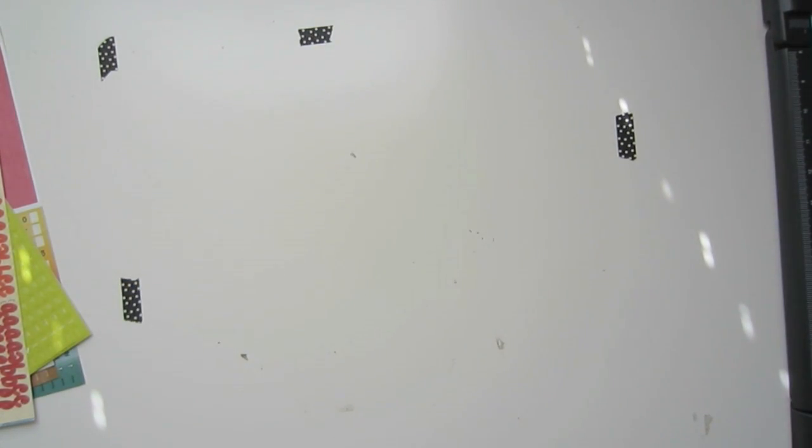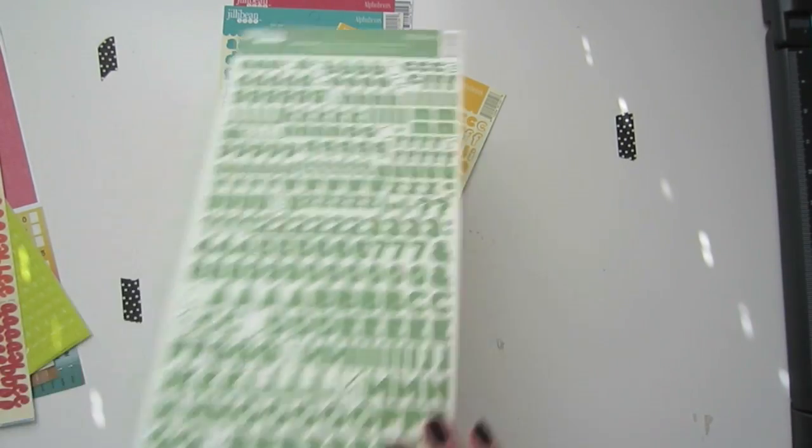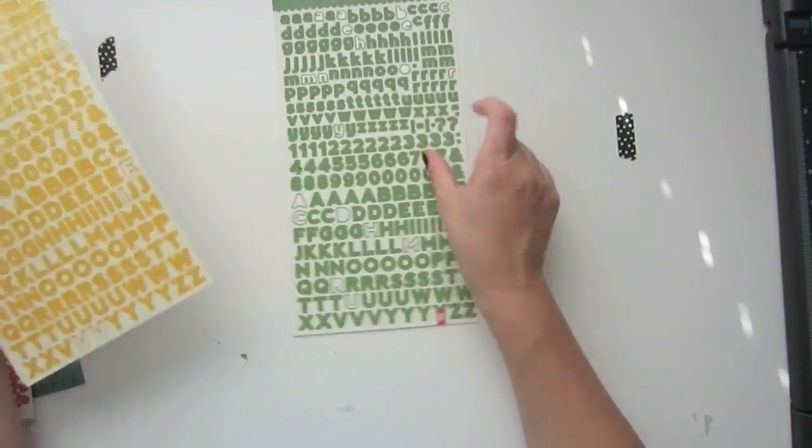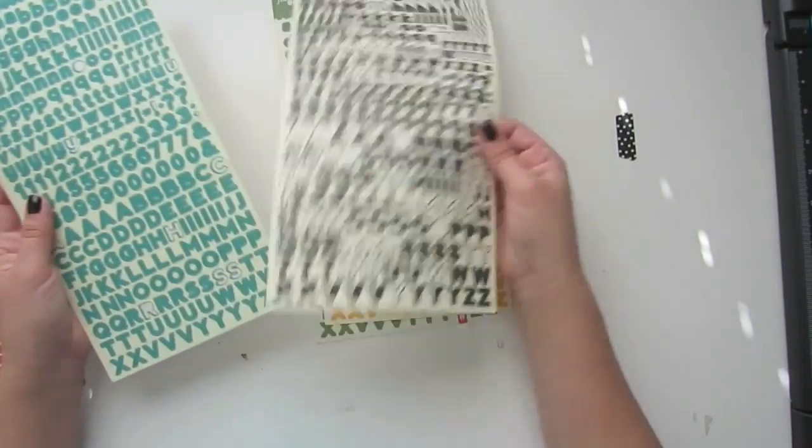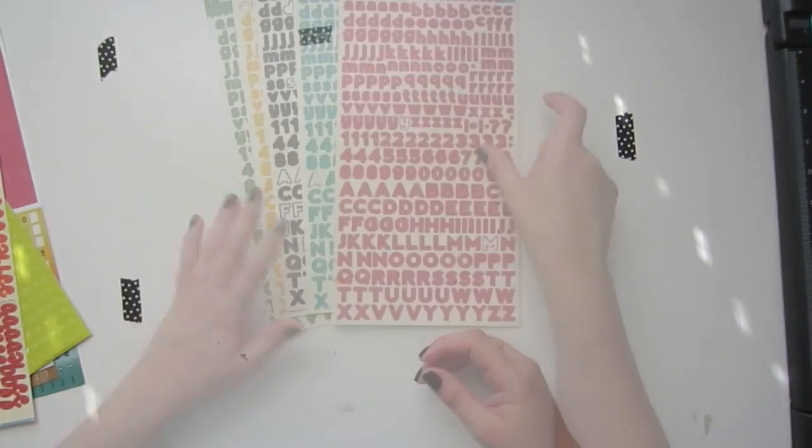And then another brand that I use too is Jelly Bean Soup. So I have a few of these and I have the basic colors. I have the green, the yellow, of course black, and then like a teal color and a red.